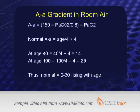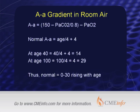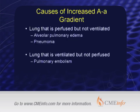The normal AA gradient is the patient's age divided by 4, plus 4. So for a 40-year-old, it's 40 over 4 plus 4, which is 14. For a 100-year-old, it's 100 over 4 plus 4, which is 29. In summary, the normal AA gradient ranges from 0 to 30, gradually rising with age, but it should never go above 30. If you calculate it and it's over 30, you know the person has an elevated AA gradient.